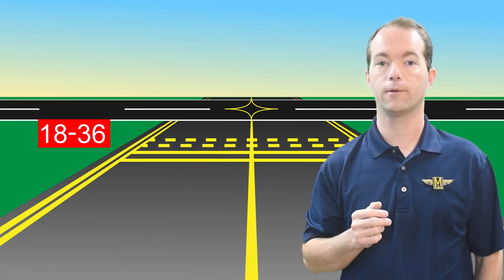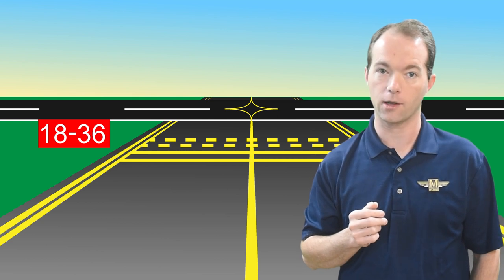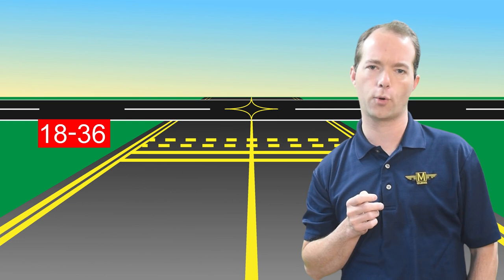Runways are white. Taxiways are yellow. Watch 1-2-1 Mike and be a smart fellow. Taxiways have letters. Runways have numbers. Know the difference so you don't make blumbers.